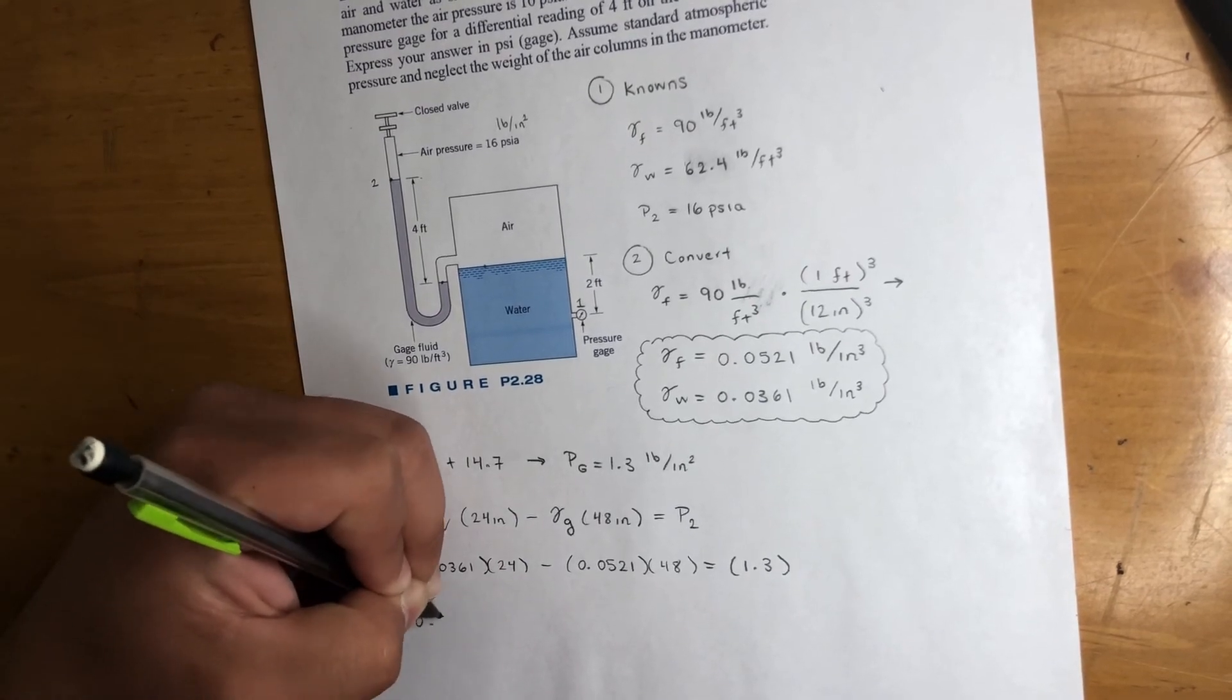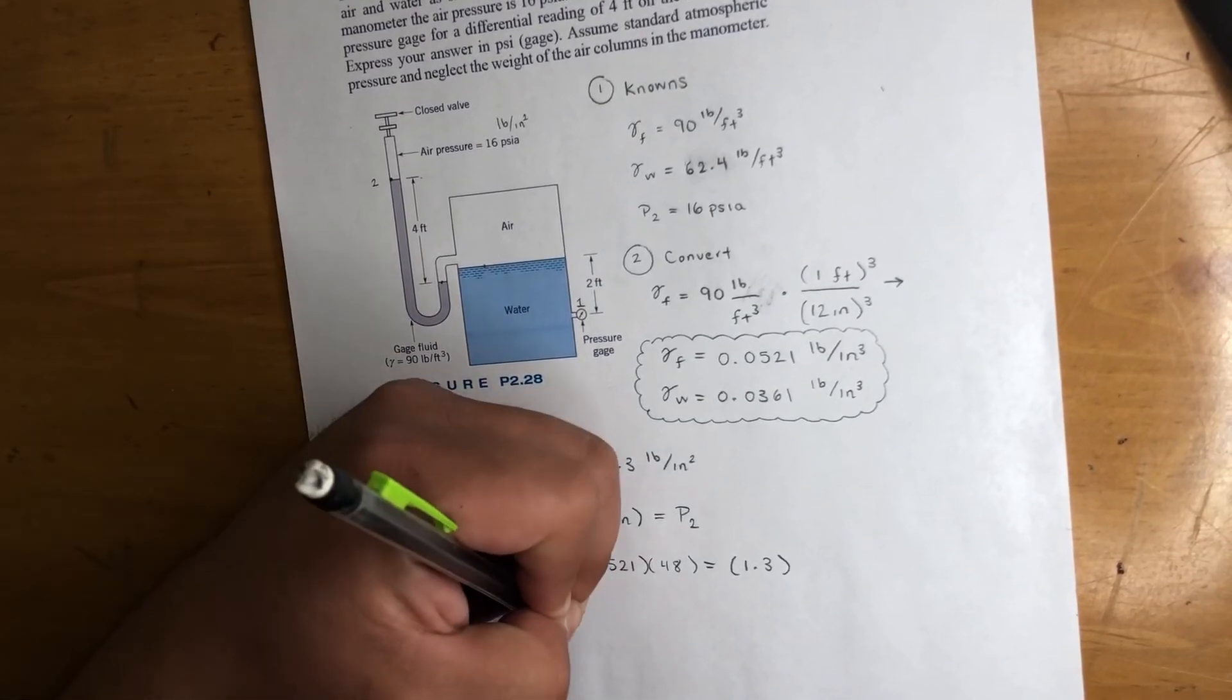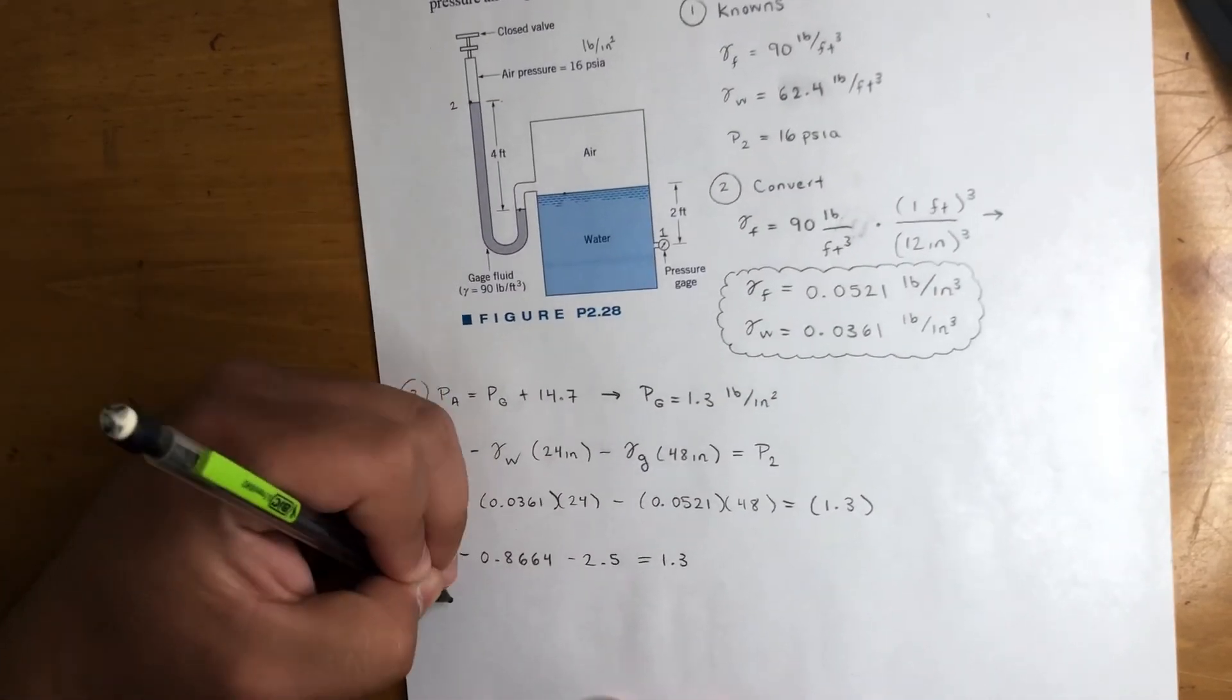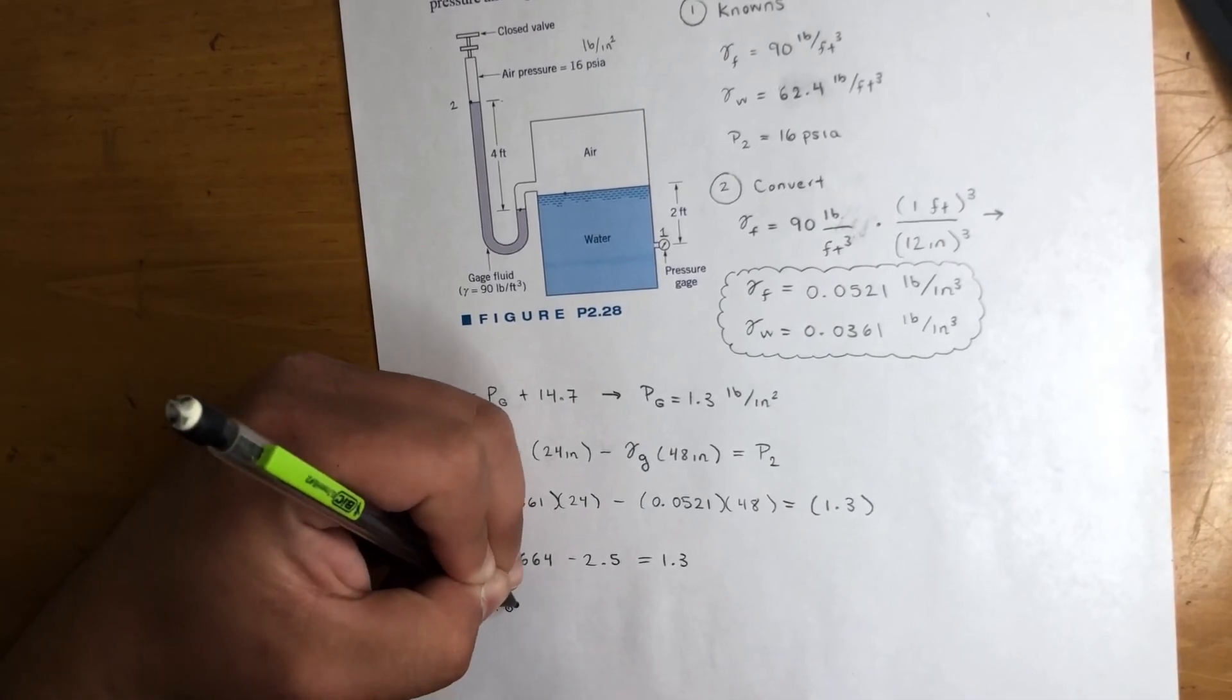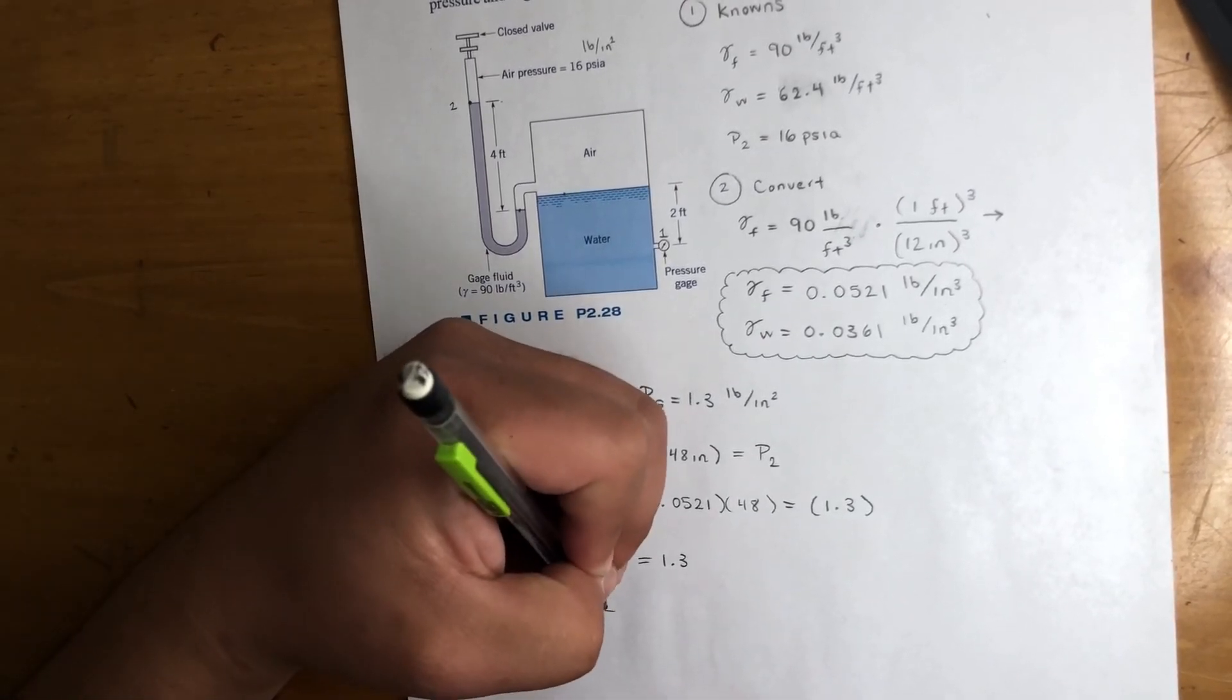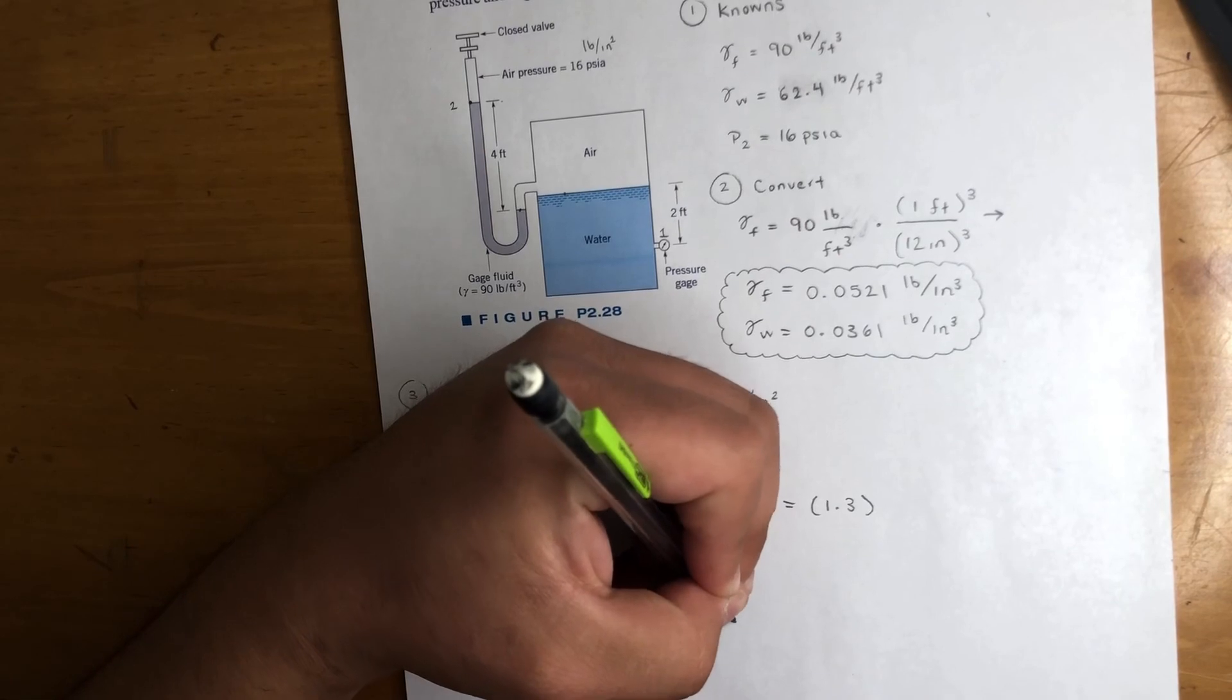If you do the math right here, you'll get p1 minus 0.8664 minus 2.5, and that's equal to 1.3. Move everything to that side, you'll get your p1 is equal to 4.67 pounds per square inch. In other words, 4.67 psi gauge.